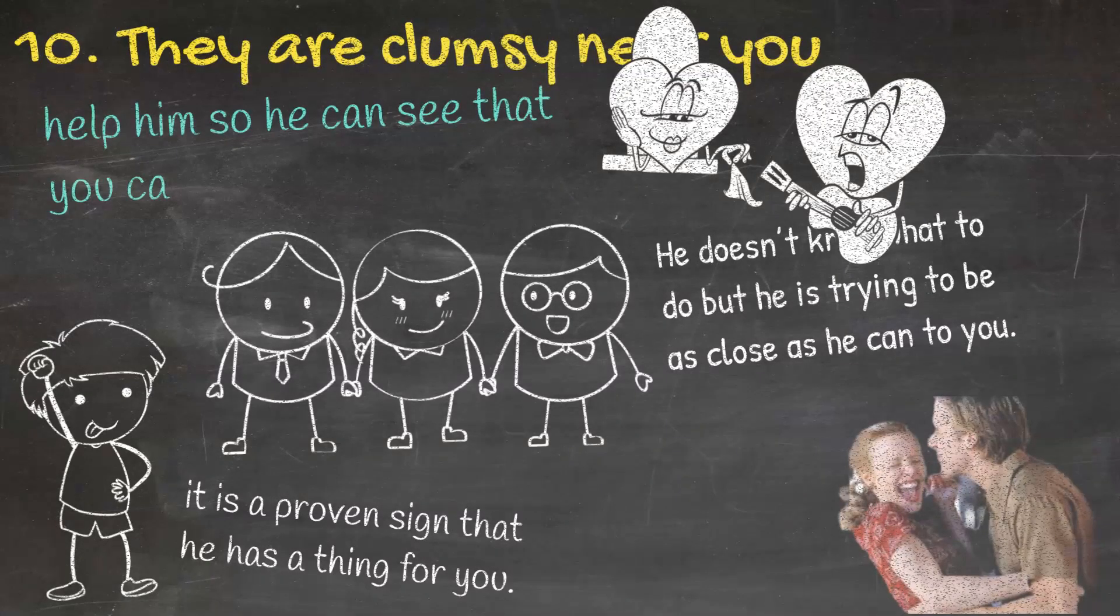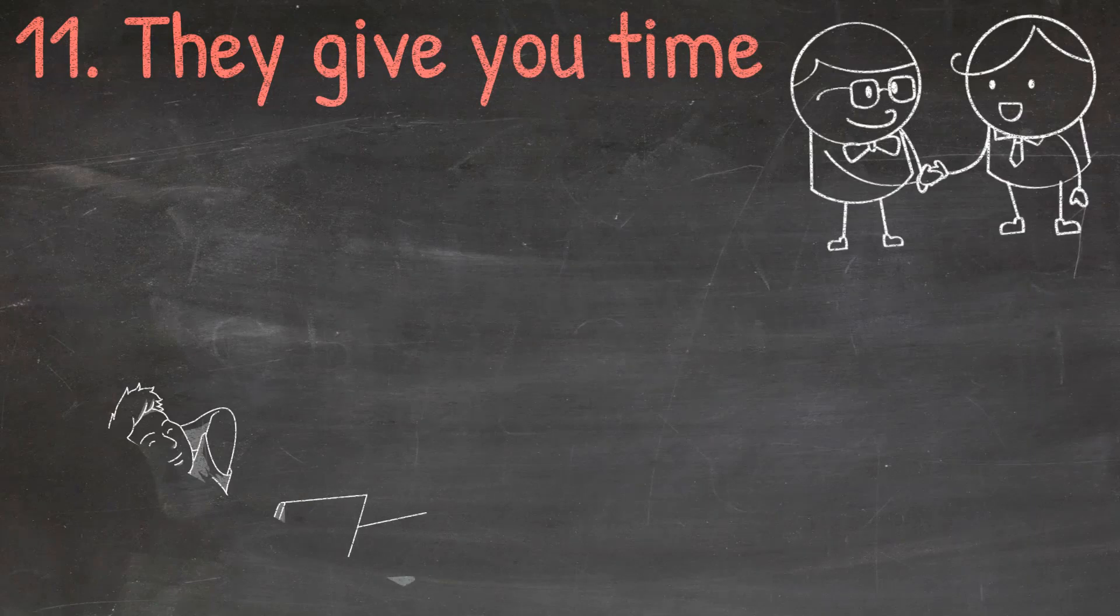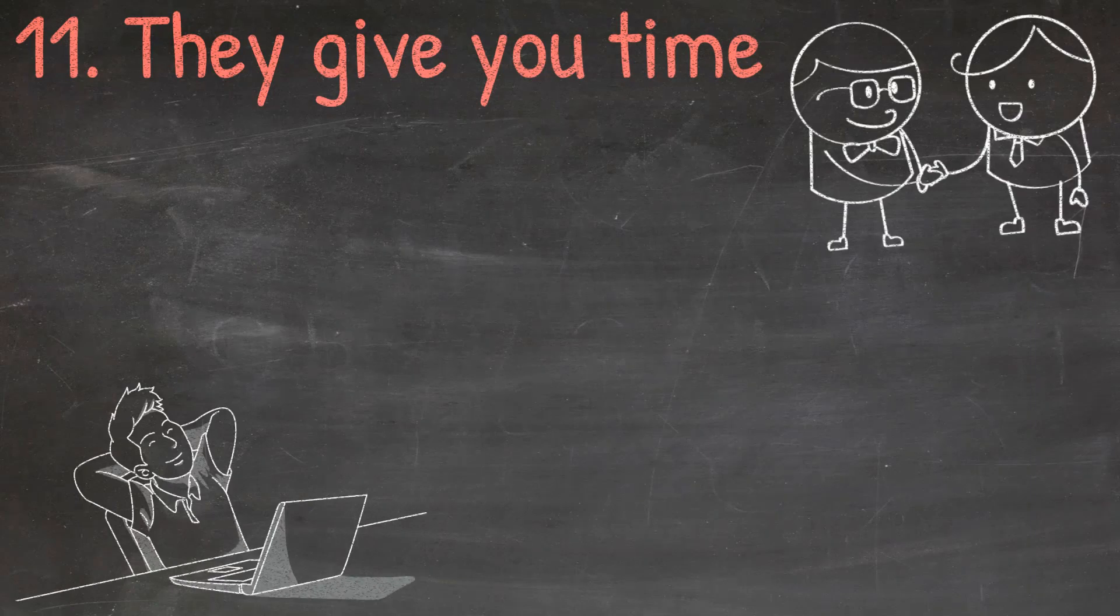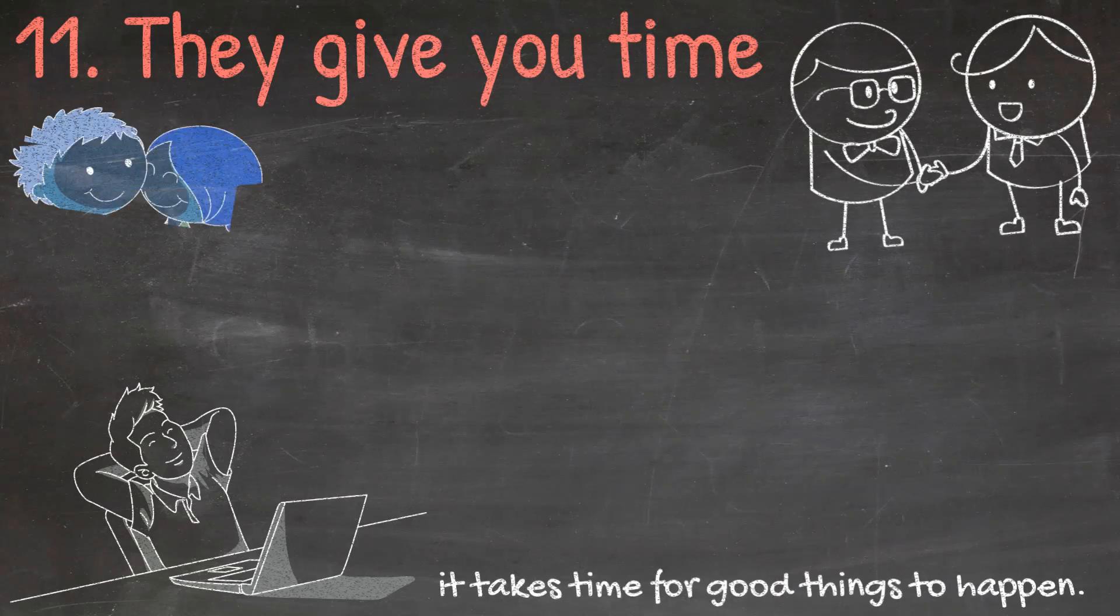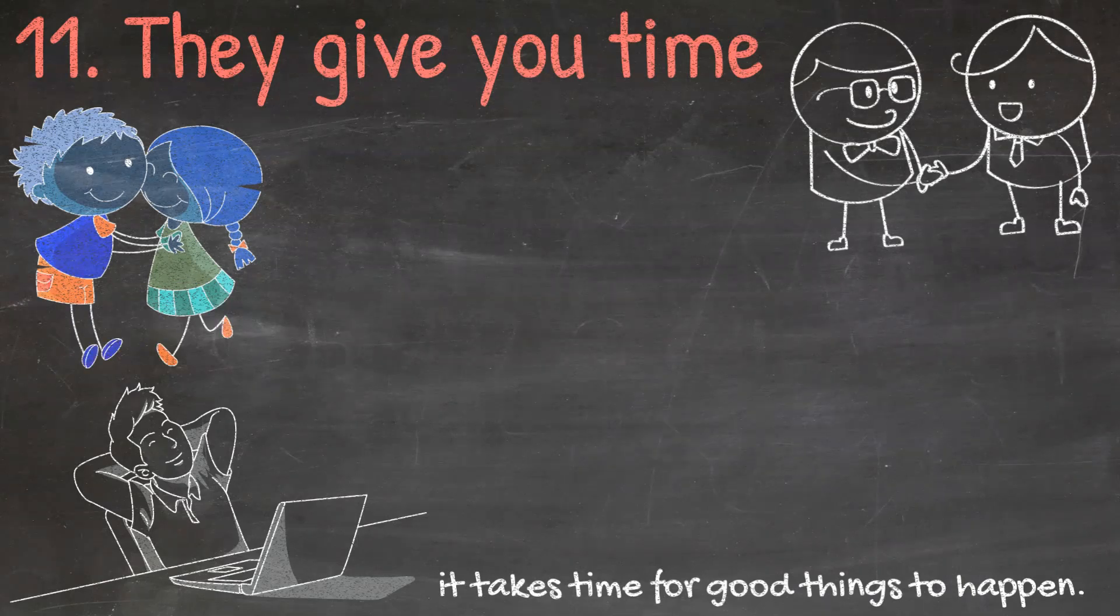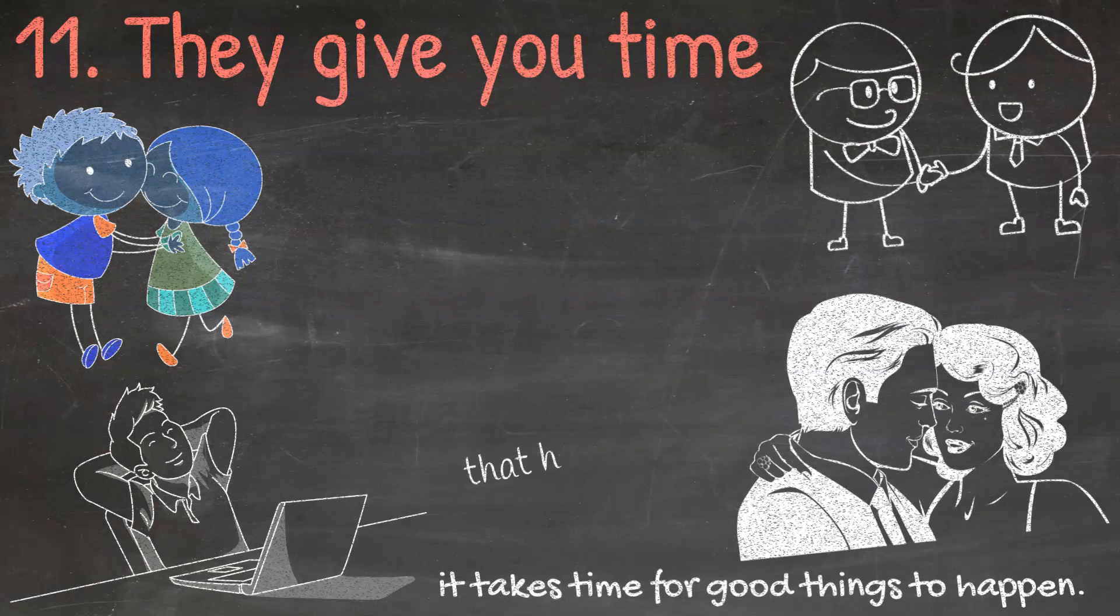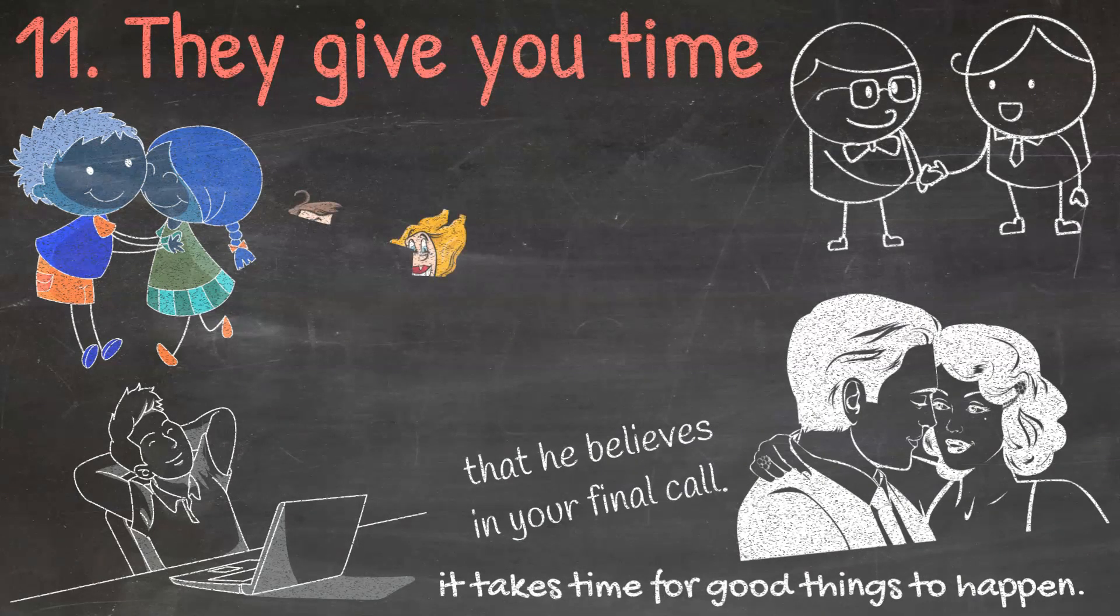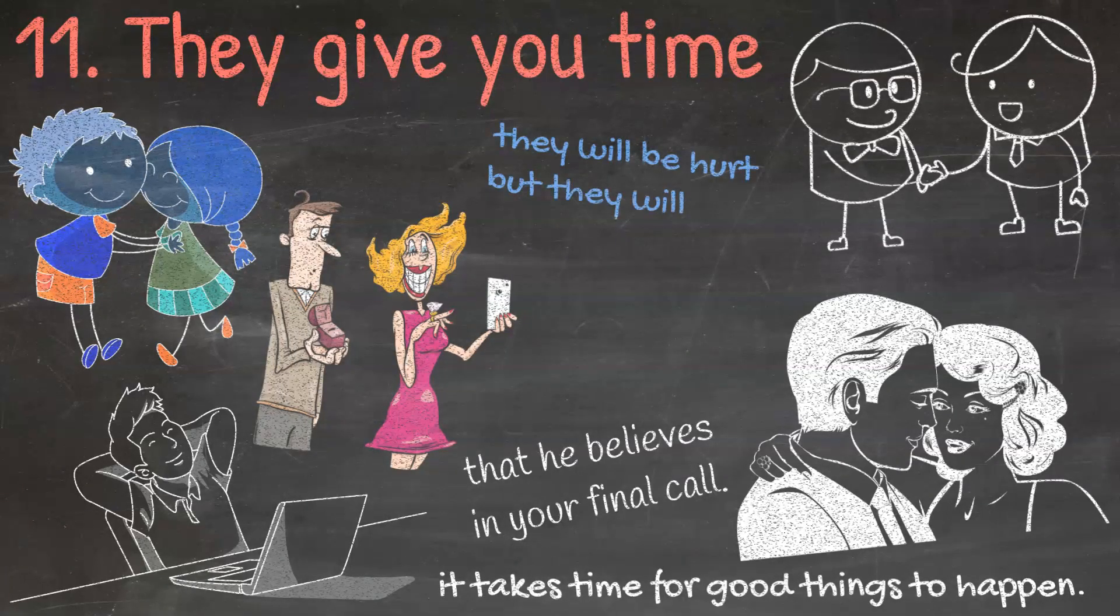Eleven: They give you time. You see, when somebody really loves you, they will give you enough time to decide whether you want to be with them or not. They don't force you to make a decision overnight and they know that it takes time for good things to happen. Giving time is a sign of attraction. Even if you think it is not a big deal, when a guy gives you time to decide what you really want, it means he gives you a part of himself and he believes in your final call. And if they don't get what they want, they won't be mad, they will be hurt. If they fall in love with you, they will be hurt but they will never show that to you. It is because they respect you and because your happiness comes first to them.